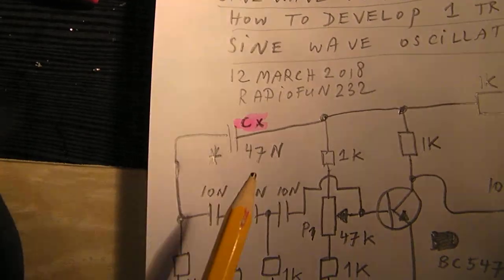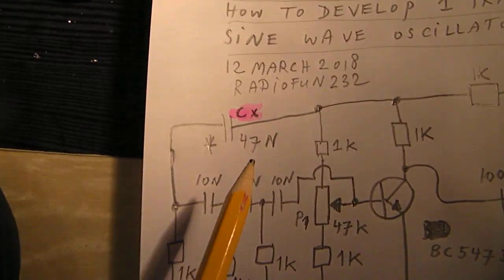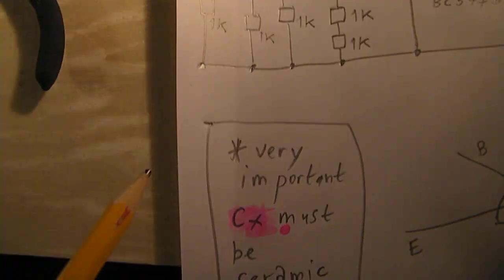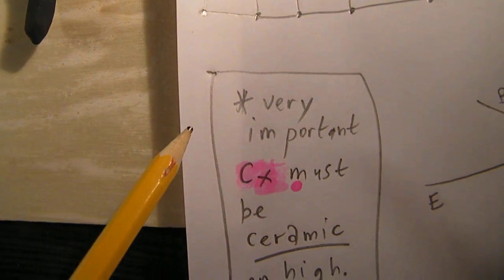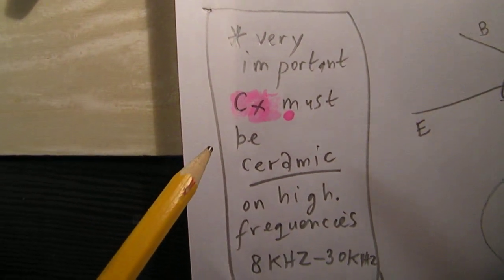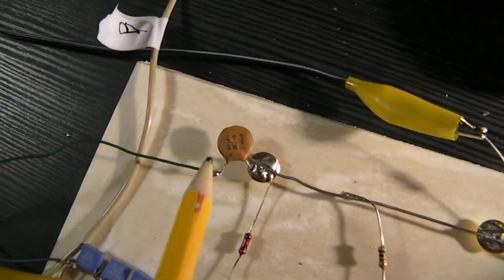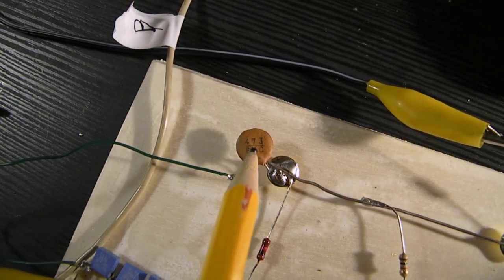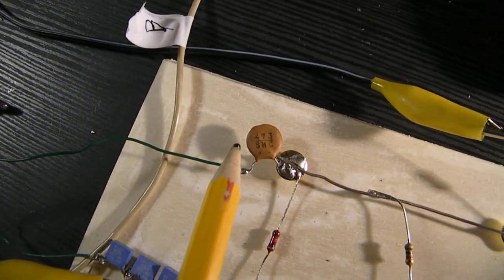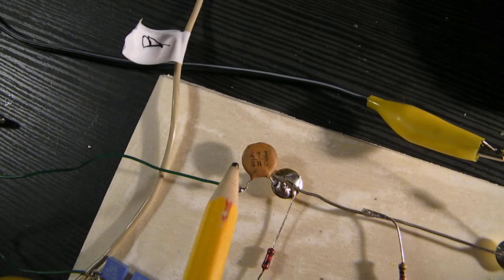That's very important and you can do some experiments changing the value from that cap. So again very important, CX must be ceramic on high frequencies and that's the reason why I've used here also a ceramic capacitor because it works now on 6.8 kilohertz.